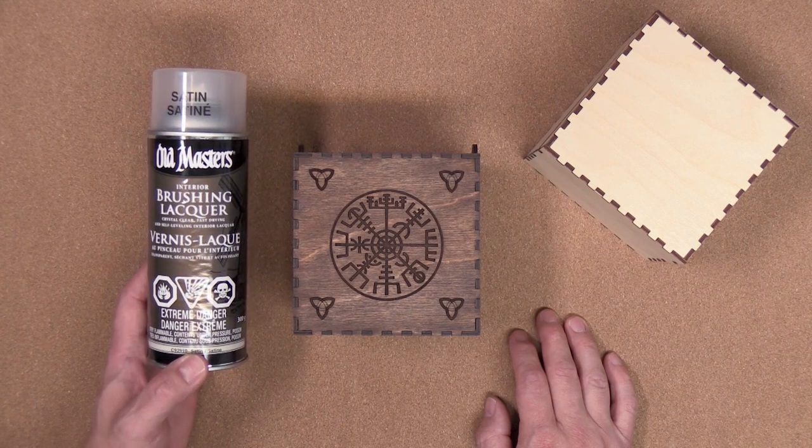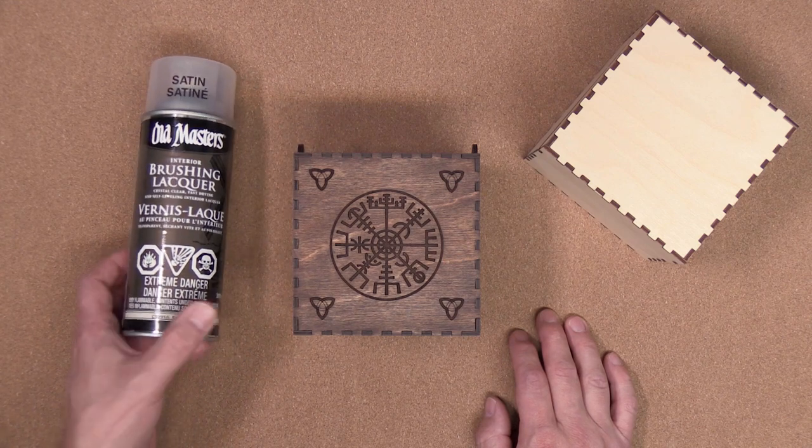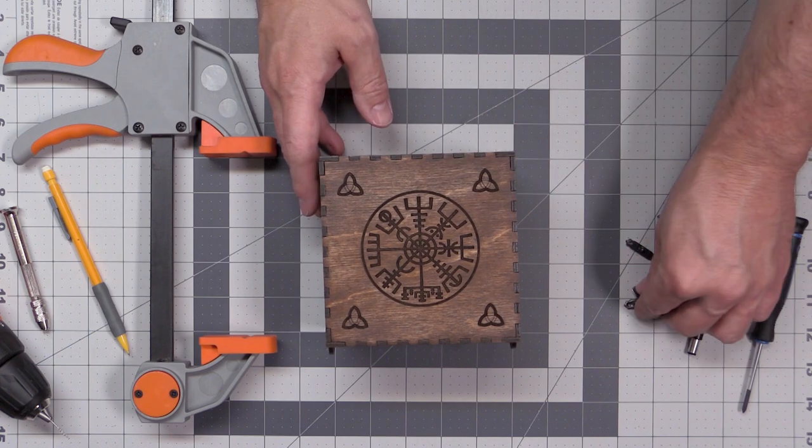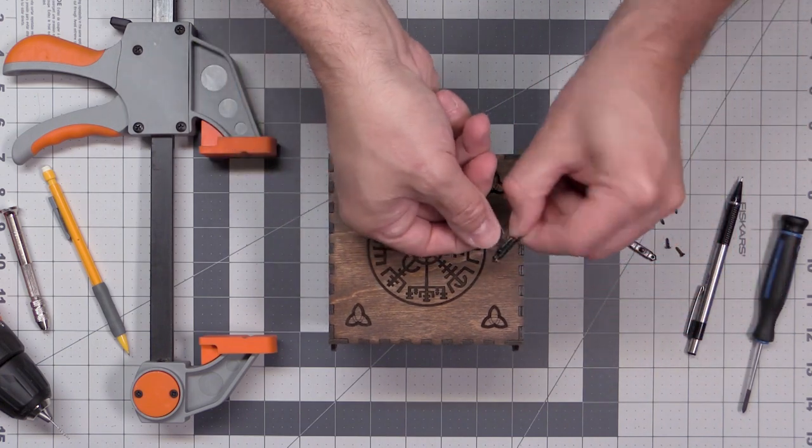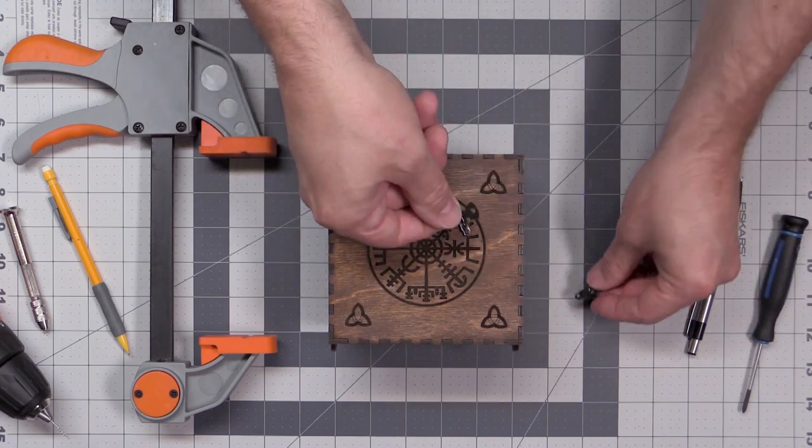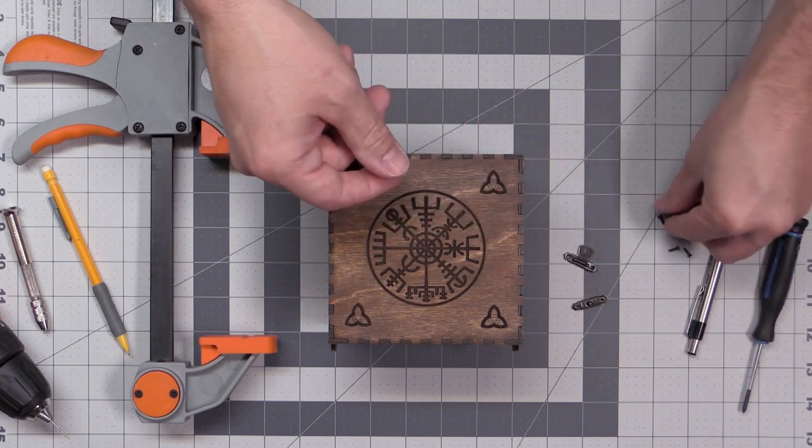I prefer to use a lacquer as I find it gives the best looking finish. Once the lacquer is dried, it's time to complete the box by applying the hasp.